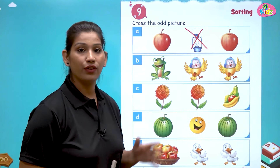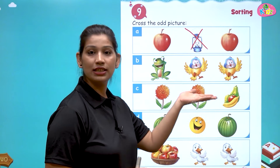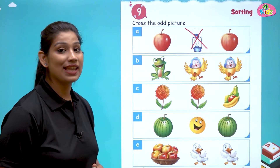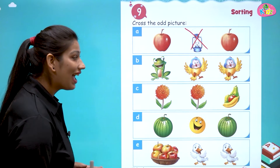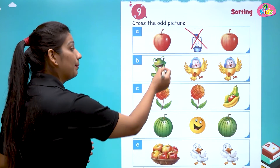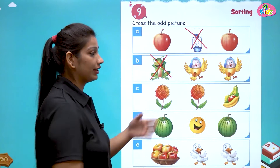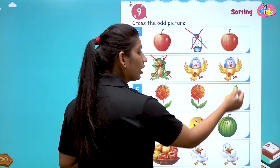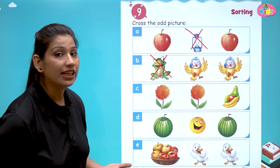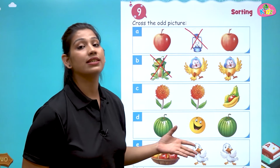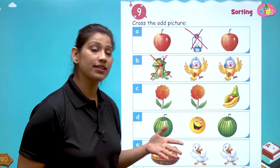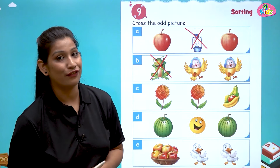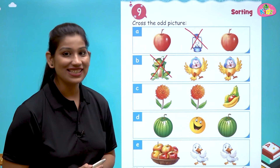Next we have frog, bird, bird. Which thing is not the same as the others? Yes — frog! Birds are two; they are the same. Both are in yellow color. Both have a beak. They are the same because they are birds, and frog is a different animal. So the frog is different — it is odd.